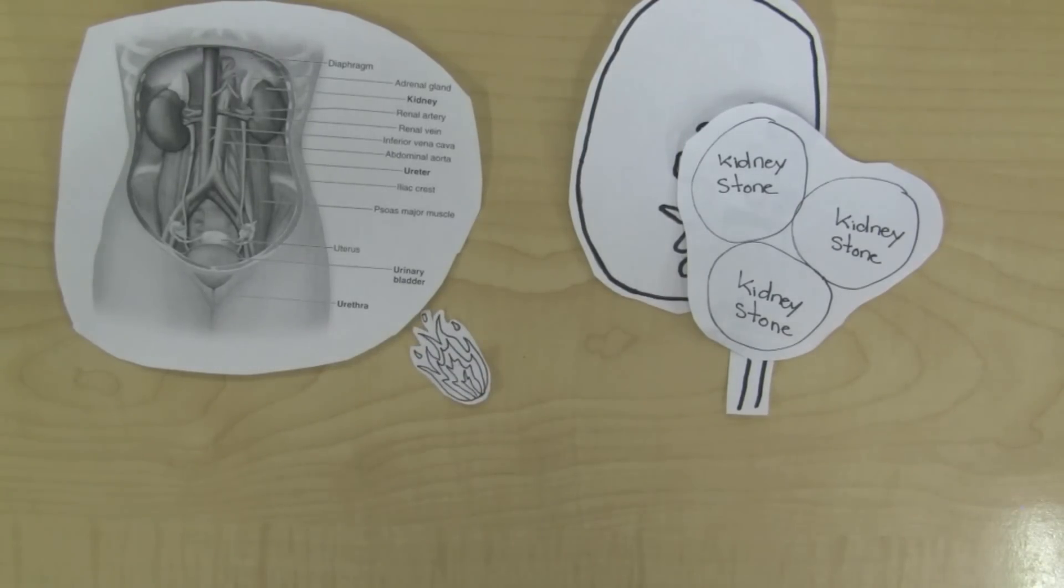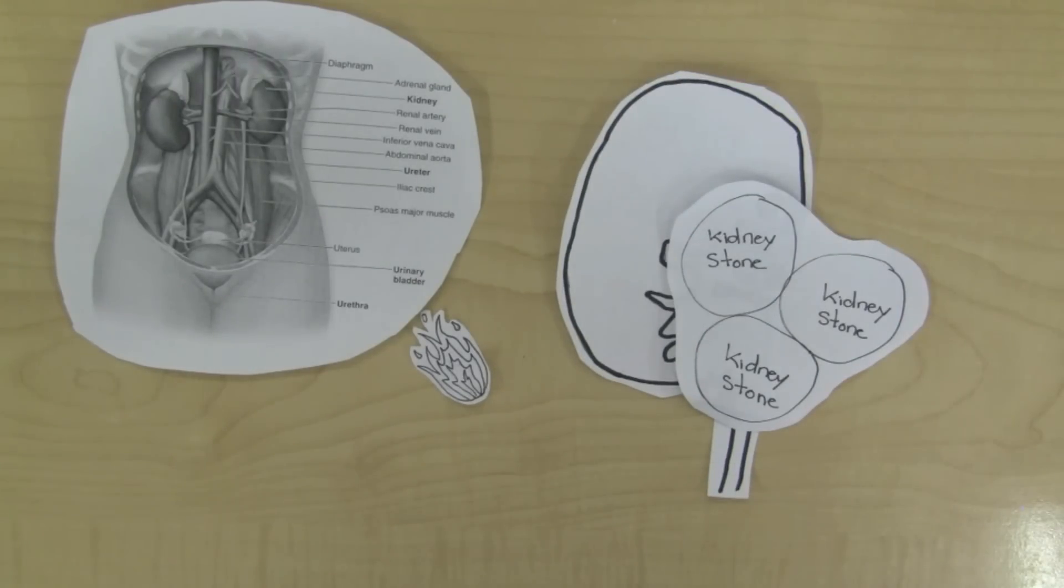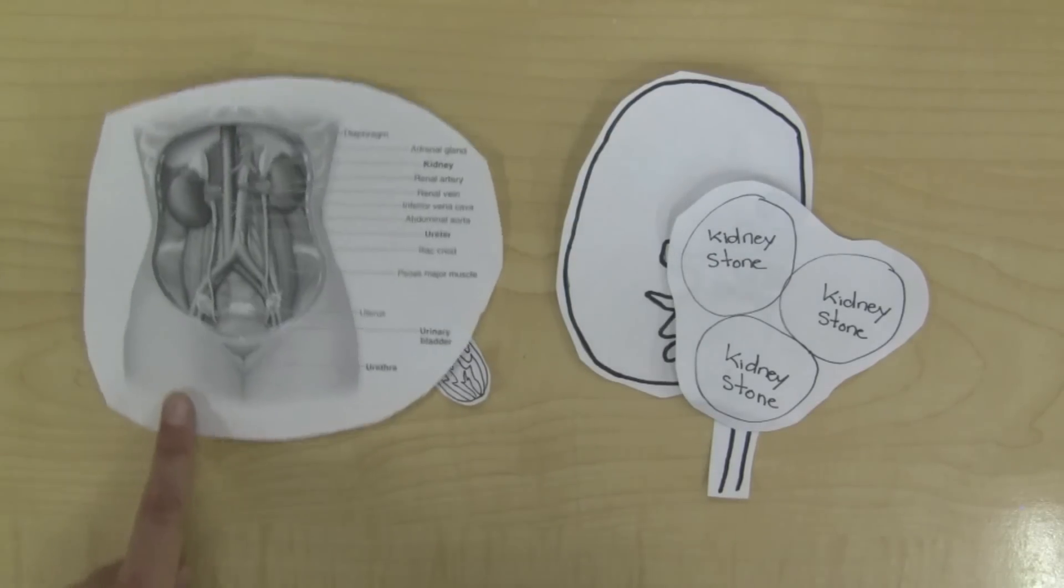Urinary tract infection is when one or more parts of the excretory system is infected with bacteria. This is usually caused by bacteria that enters the urethra or system. It can also be caused by bacteria in your blood that affects your kidneys.